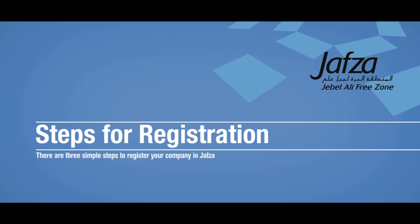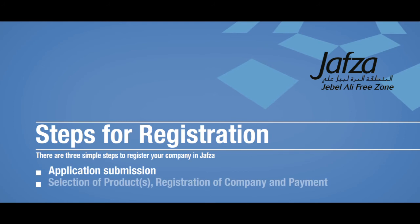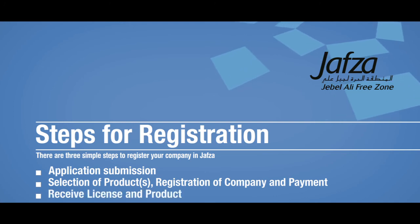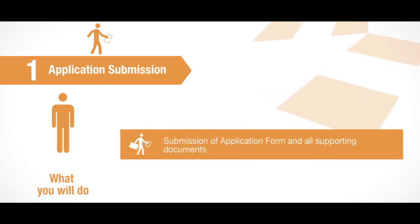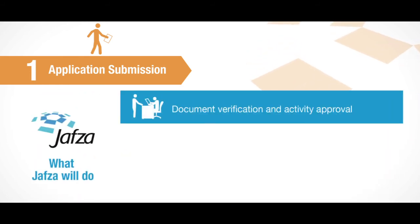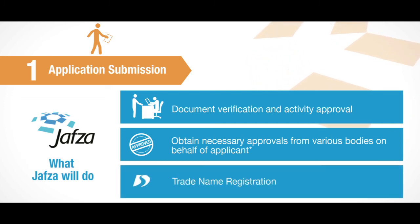Steps for Registration: There are three simple steps to register your company in JAFSA. Step 1: Application submission. Step 2: Selection of products, registration of company, and payment. Step 3: Receive license and product. For Step 1, you submit the application form and all supporting documents. JAFSA will carry out document verification and activity approval, obtain necessary approvals from various bodies on behalf of the applicant, and complete trade name registration. Additional approvals may be necessary for certain activities.